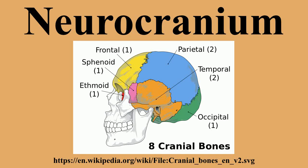In mammals, the neurocranium, also known as the brain case or brain pan, is the upper and back part of the skull. The skull can be divided into two parts: the neurocranium, which forms a protective case around the brain, and the facial skeleton.